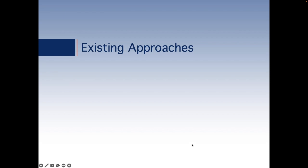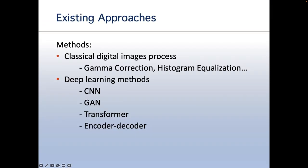Next, I will introduce the existing approaches. There are many methods for image enhancement, and many algorithms can be used for that. But they can be summarized into two kinds of methods. The first kind of method is classical digital image processing. For example, the gamma correction, the histogram equalization. These methods focus on the processing of the signals from the images.